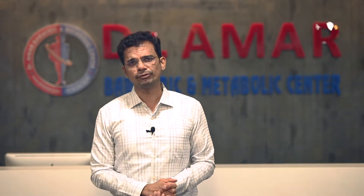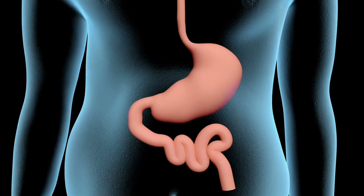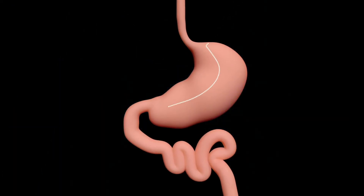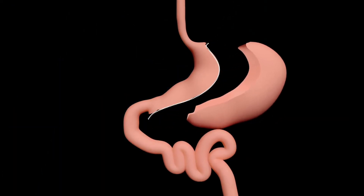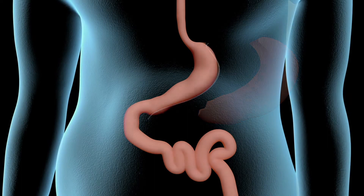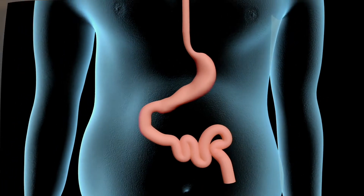Gastric sleeve surgery is the most commonly performed bariatric surgery. It is also known as sleeve gastrectomy or vertical sleeve gastrectomy. In this surgery, by laparoscopic method, we remove part of the stomach, and the stomach volume will come down.